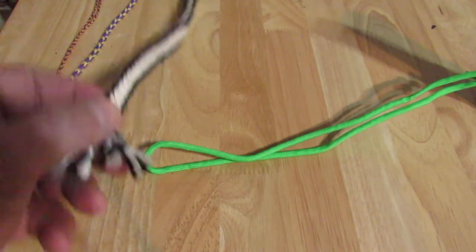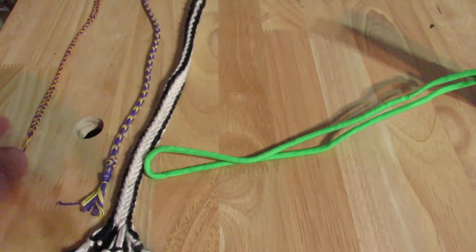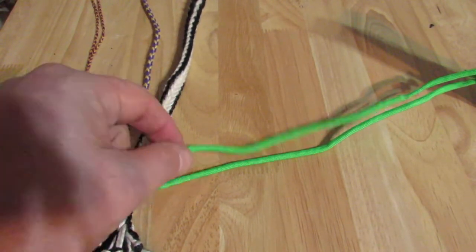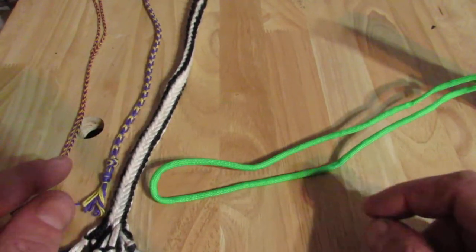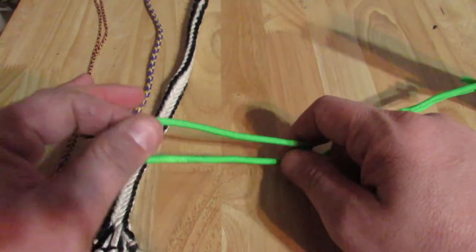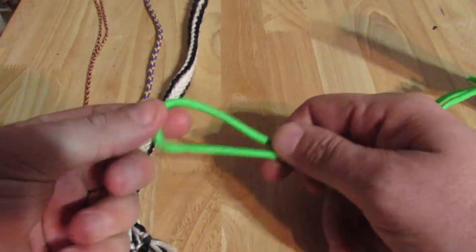So how do you get them attached? Well that's where this part comes in. Basically you take the end of your loop and you're just going to put it over your index finger and your thumb from underneath like this.